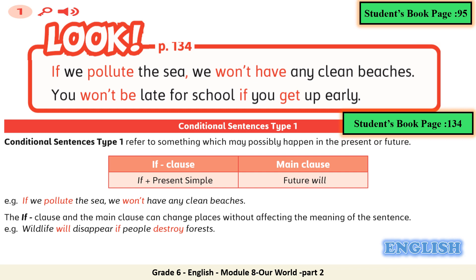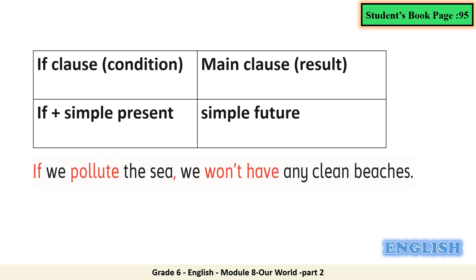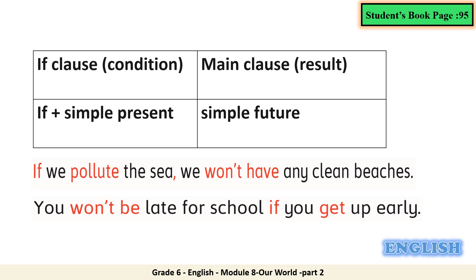Let's read the examples: 'If we pollute the sea, we won't have any clean beaches.' The If-clause and the main clause can change places without affecting the meaning of the sentence. 'Wildlife will disappear if people destroy forests.' Now let's study the chart below. We have the If-clause followed by simple present, then the main clause with simple future, or vice versa. 'Pollute' is simple present and 'won't have' is simple future.